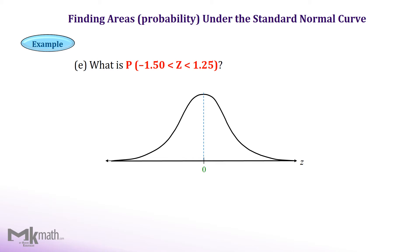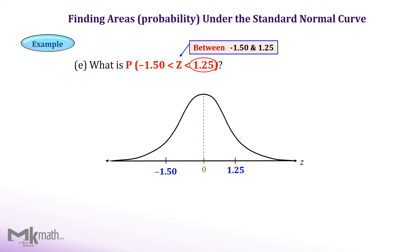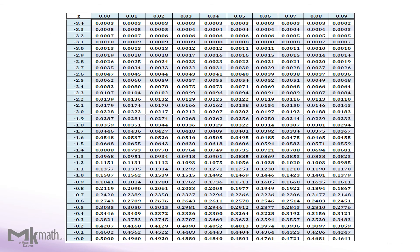Let's take a look at the next example. Mark one of the z-scores, minus 1.50, on the normal distribution on the left side of the center since it is negative. Then mark the other z-score, 1.25, on the right of the center. Once we locate the z-scores, then read the direction. We read it as between minus 1.50 and 1.25, so we shade the between area. Let's look up the table using minus 1.50 first. The intersection of minus 1.5 and the second decimal place of 0 gives the left cumulative area to z equal minus 1.50, which is 0.0668.